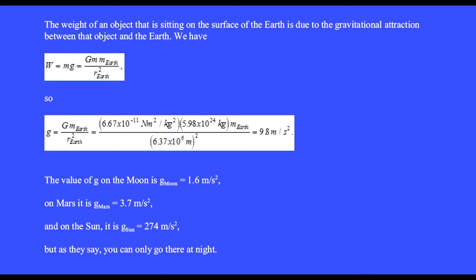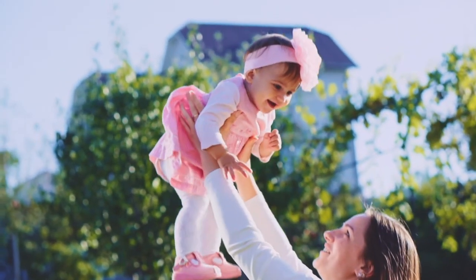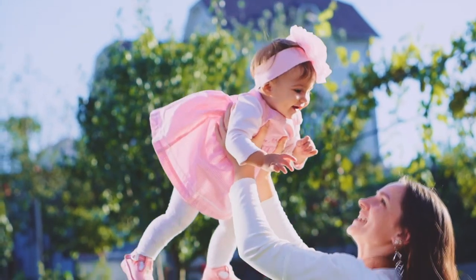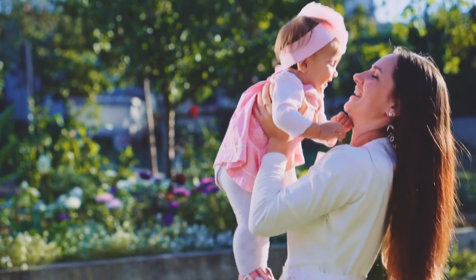In the same way we calculate the gravitational acceleration little g for any astronomical object. The value of g on the moon is 1.6 meters per second squared, on Mars it is 3.7 meters per second squared, and on the Sun it is 274 meters per second squared. But as they say, you can only go there at night.